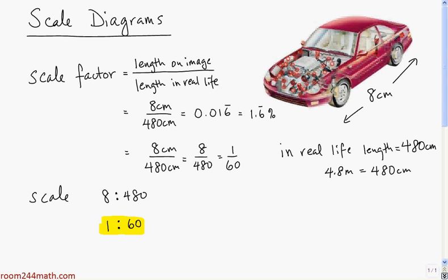Why is the 1 to 60 scale used so commonly? It's a very useful way to think about scale diagrams because it means one unit on the diagram corresponds to 60 units in real life. For instance, if we measure the wheel and find it's 1 centimeter on the diagram, that means in real life the wheel is 60 centimeters. So 1 centimeter corresponds to 60 centimeters.